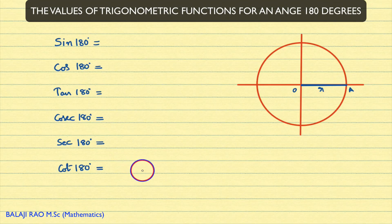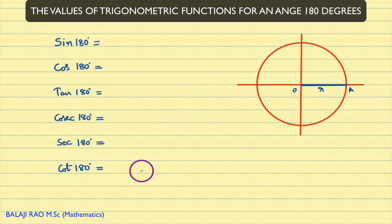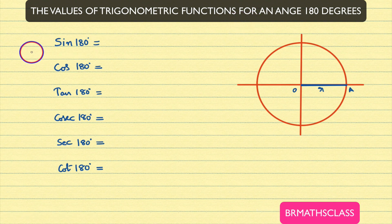Hi friends, I am Balaji Rao. Welcome to BRMAX class. In this class, we will learn the proofs of the trigonometric function values for an angle 180 degrees. We will learn the values of trigonometric functions for 180 degrees — why sin 180 degrees value is 0, why cos 180 degrees value is minus 1, and all those things.